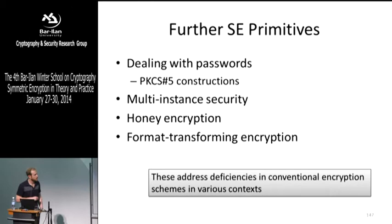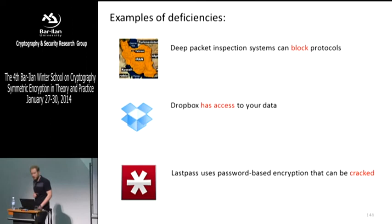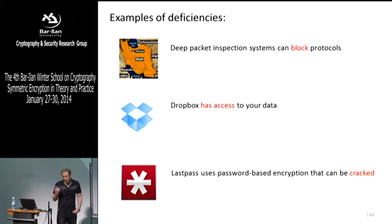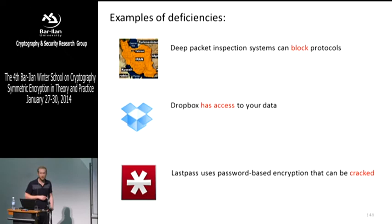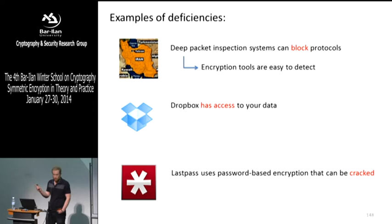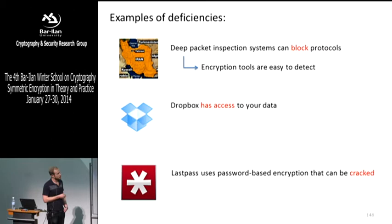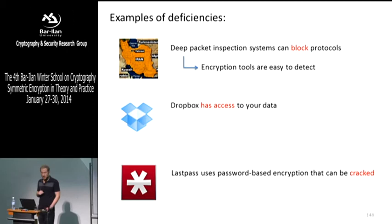Basically all these things address deficiencies in conventional encryption for very specific contexts. Here are some examples of places where symmetric encryption conventionally doesn't cut it. One example is internet censorship — our secure channel protocols are easy to detect by network sensors. They're actually looking at packets as they go over the network; it's very easy to detect that TLS is running, which allows censors to block encryption mechanisms.